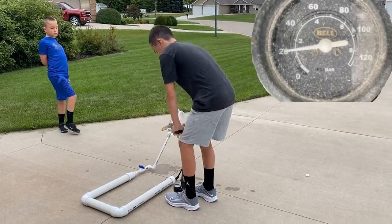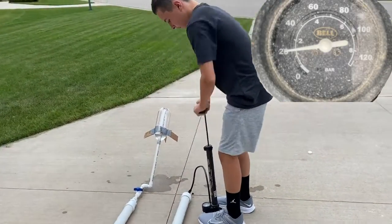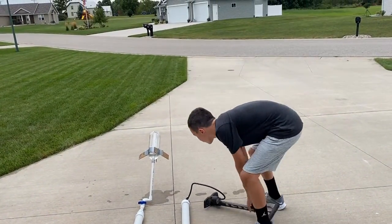Now, take a bike pump and your air rocket launcher, and pump the air rocket launcher up to 20 PSI. I'll leave a link in the description if you want to build an air rocket launcher for yourself.